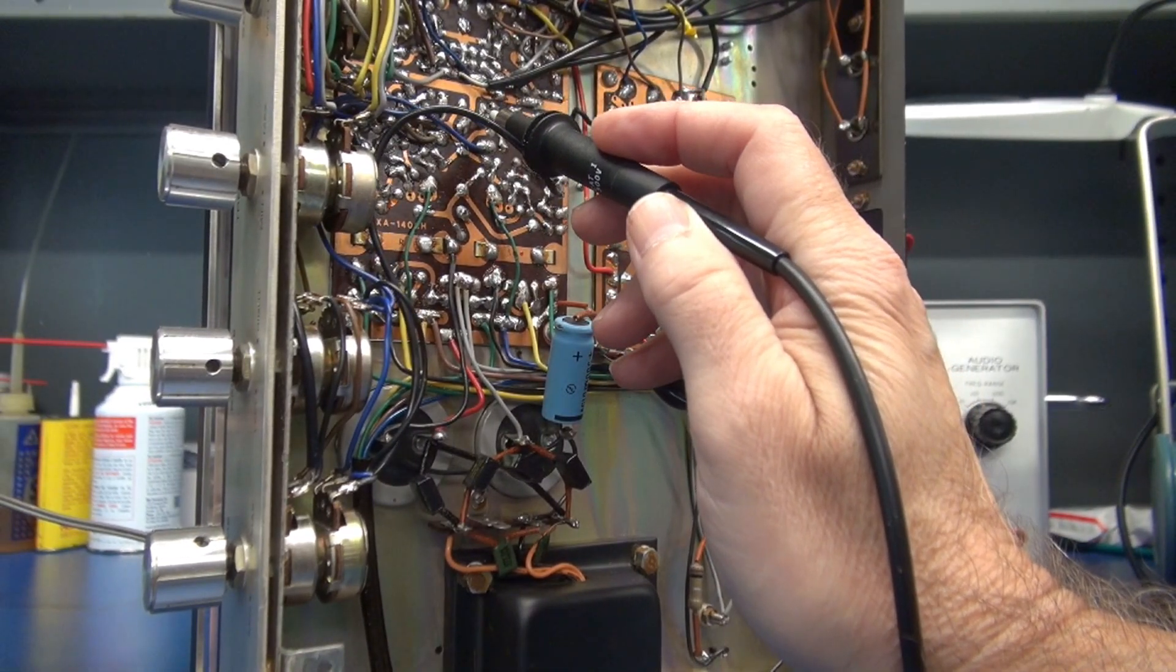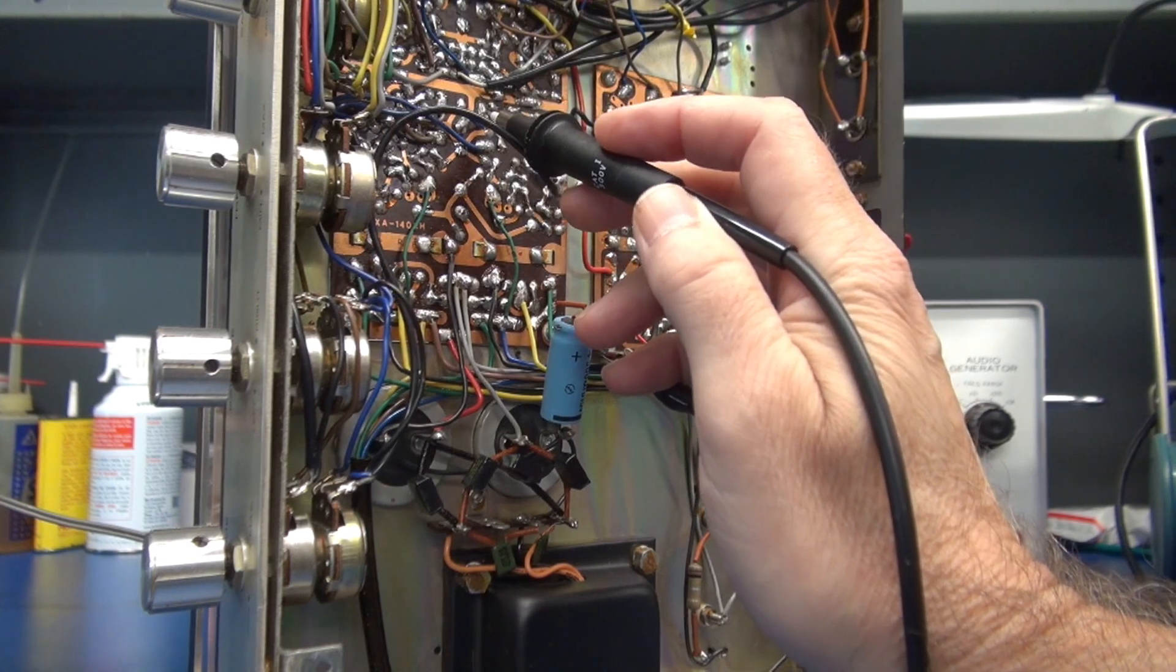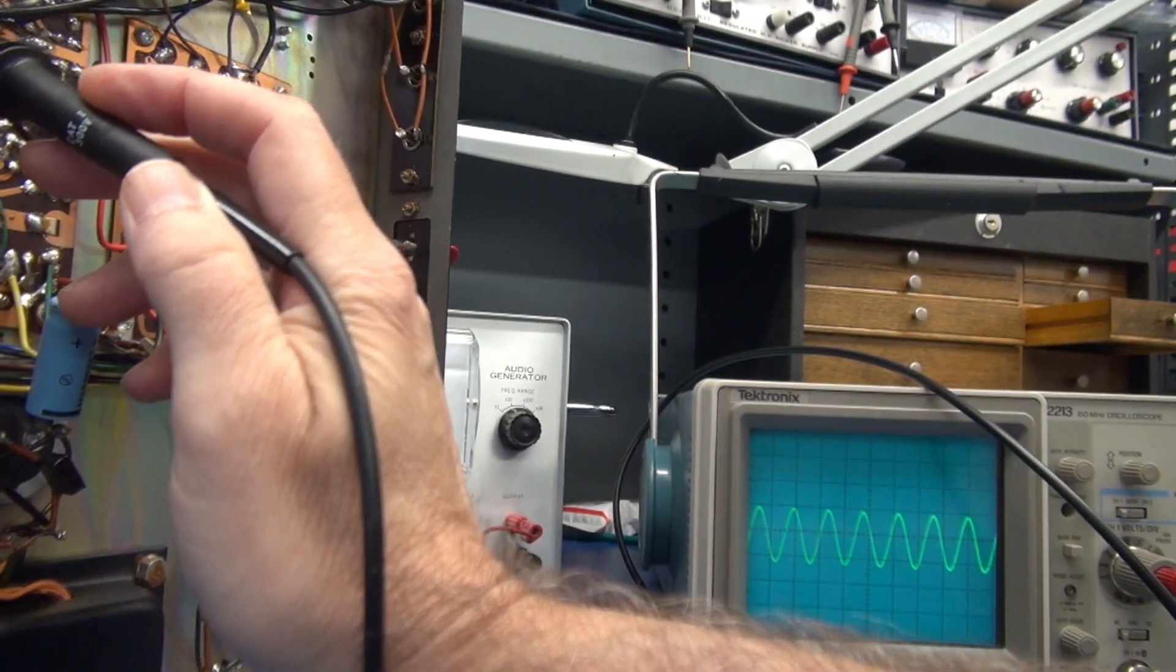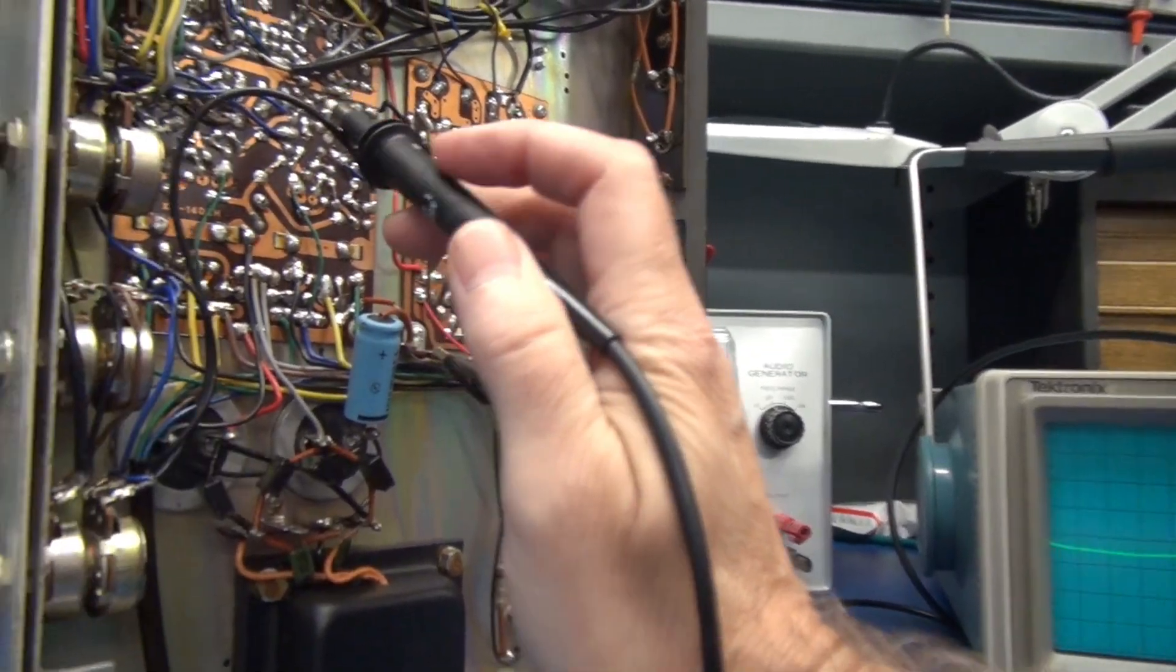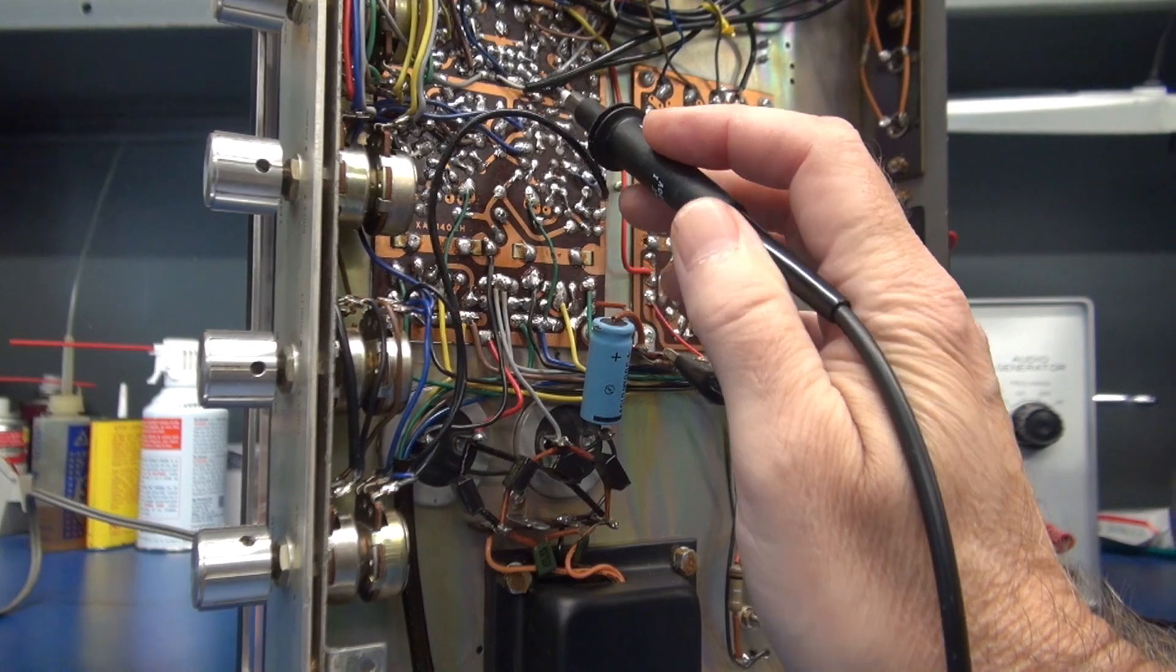So now we'll dive down to this part of the board which is another section and check for the presence of signal again. We're going to do the blue and brown. Alright, so back over to the scope.